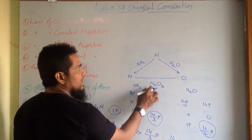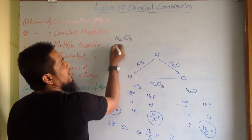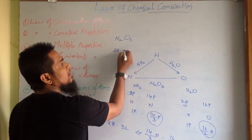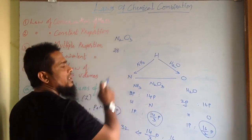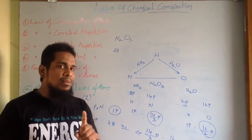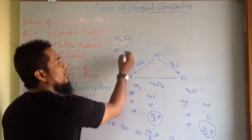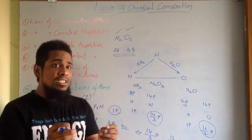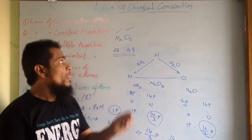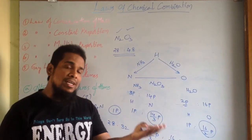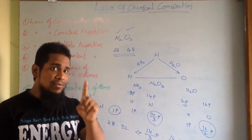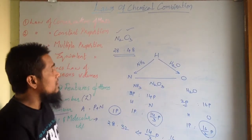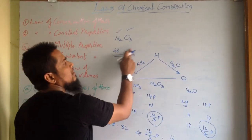Now let us check in N2O3: for two nitrogen atoms, the mass is 28 parts. For three oxygen atoms, 16 times 3 is 48. So the ratio of nitrogen to oxygen in N2O3 is 28 is to 48.